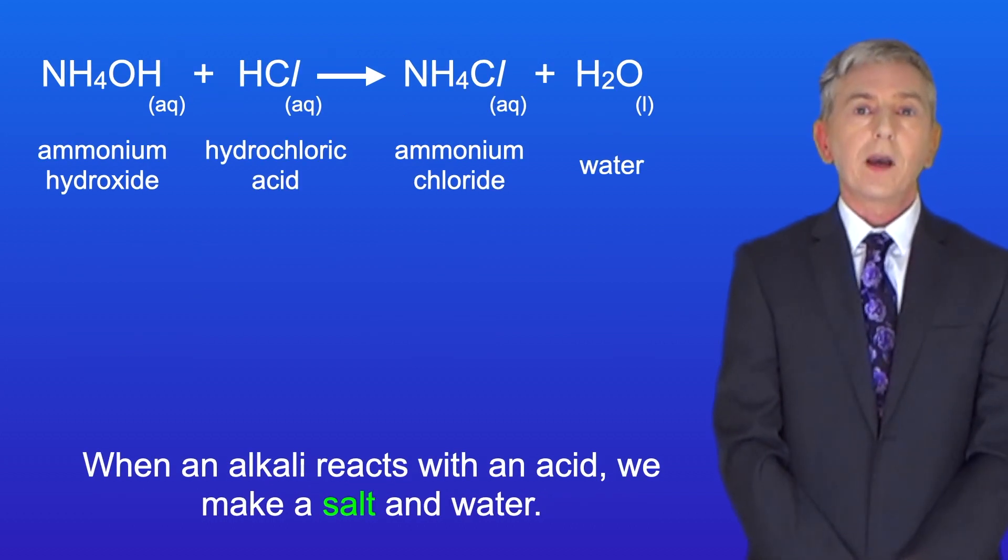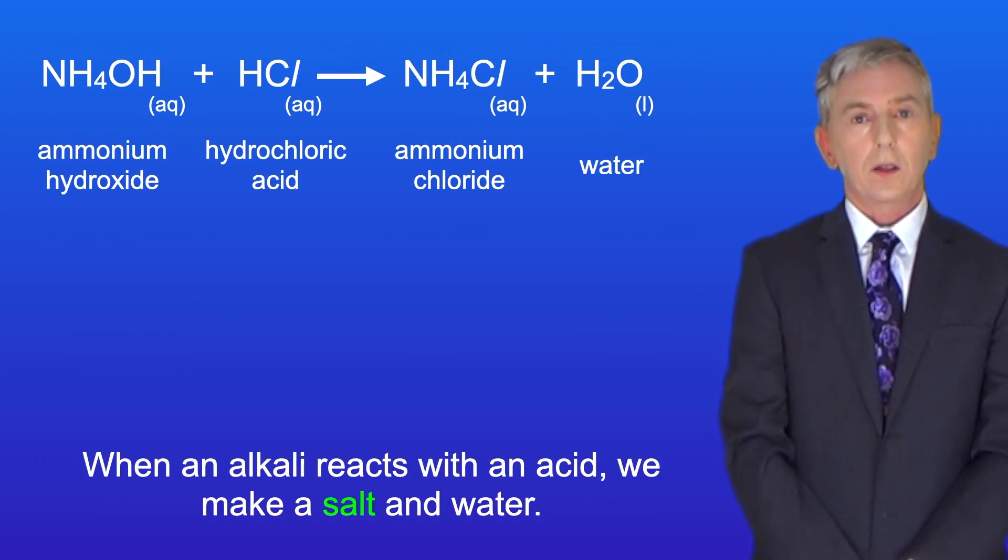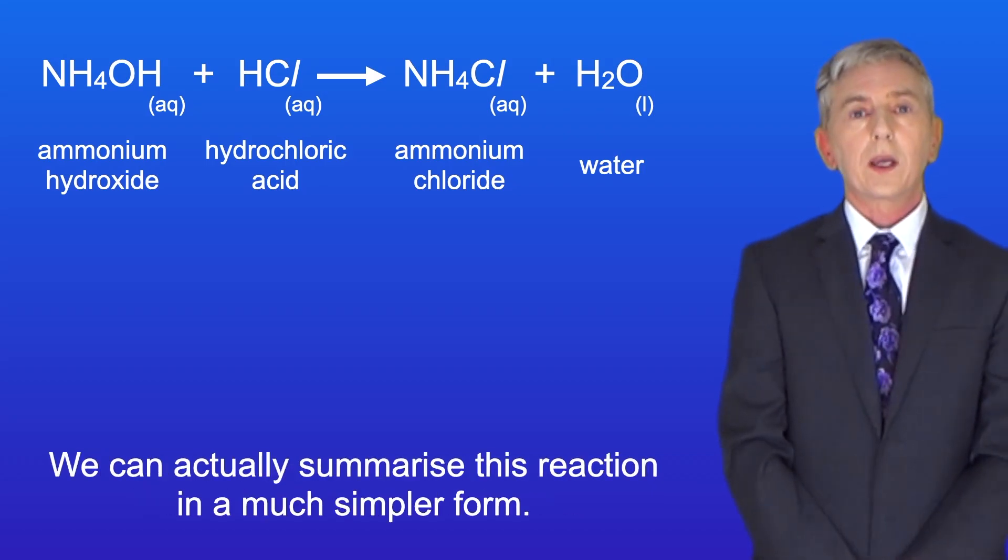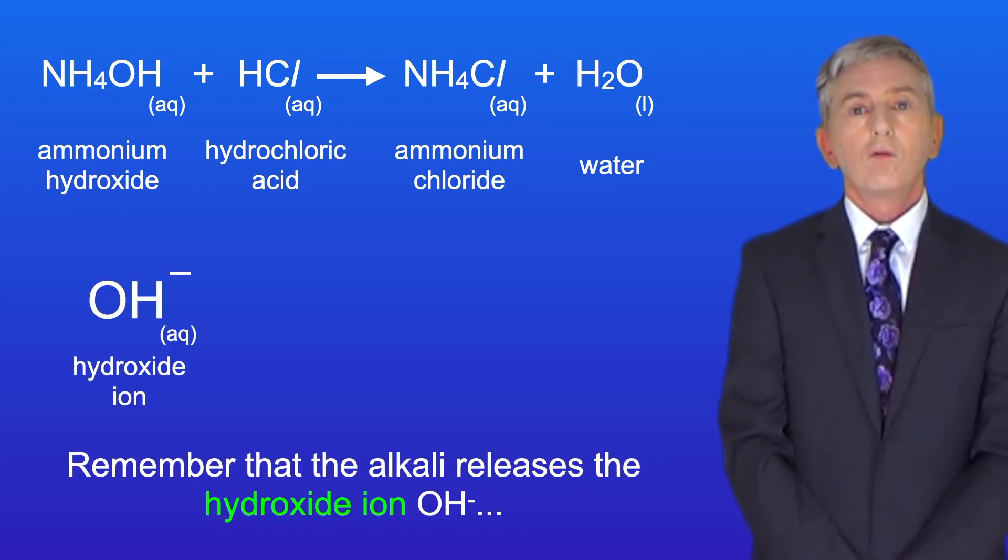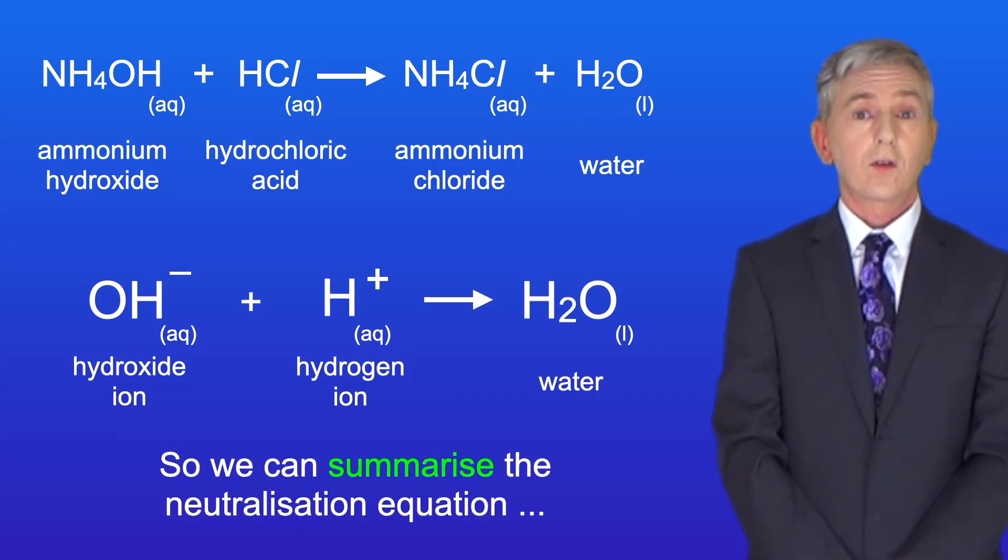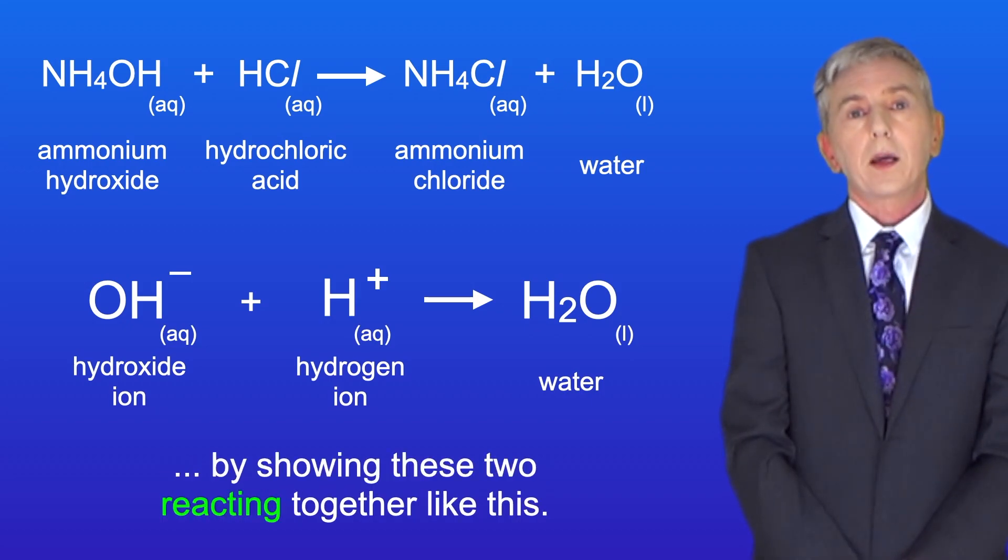When an alkali reacts with an acid we make a salt and water. Here's the reaction between ammonium hydroxide and hydrochloric acid. Now we can actually summarize this reaction in a much simpler form. Remember that the alkali releases the hydroxide ion OH- and the acid releases the hydrogen ion H+. So we can summarize the neutralization equation by showing these two reacting together like this.